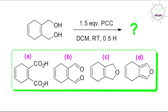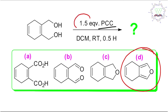So you can see that the answer is option D. Now, if this question were given in your exam, how can you solve it in less than 30 seconds? You need to keep some key information in mind: PCC is a selective oxidizing agent for alcohol to the corresponding carbonyl, and for one alcohol oxidation, one equivalent of PCC is needed. Here, 1.5 equivalents are given, so only one oxidation is possible.